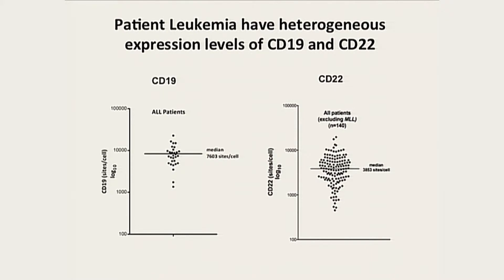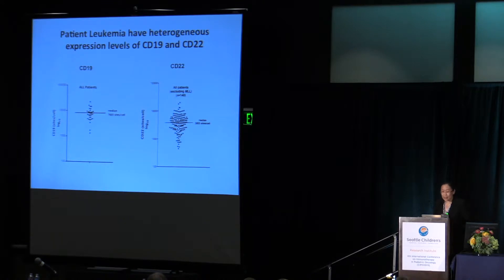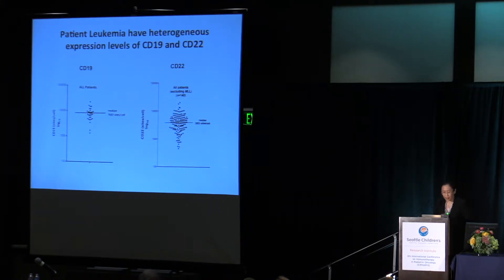This dot plot shows that this patient has very heterogeneous expression of CD19 and CD22. These are in log scale. You can see CD19 has generally higher expression density compared with CD22, but they can vary widely.